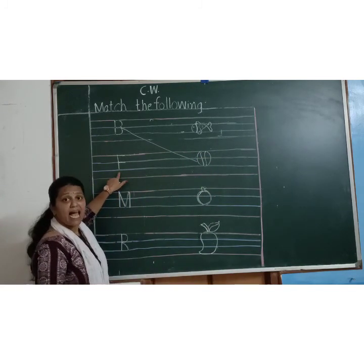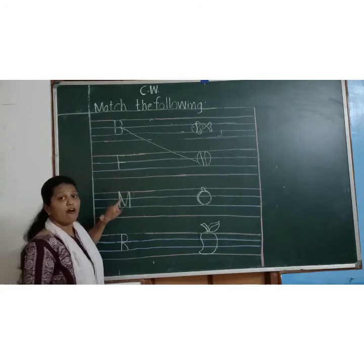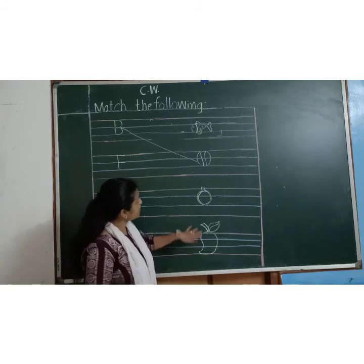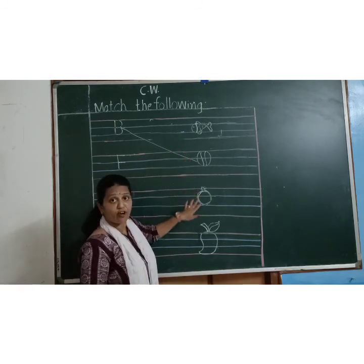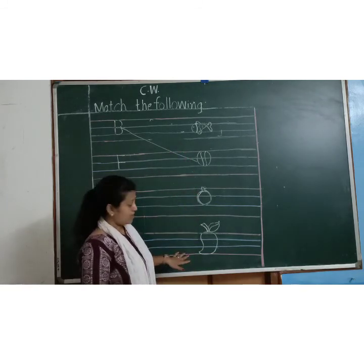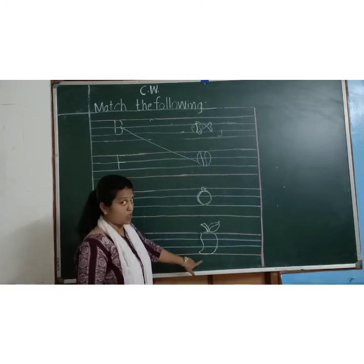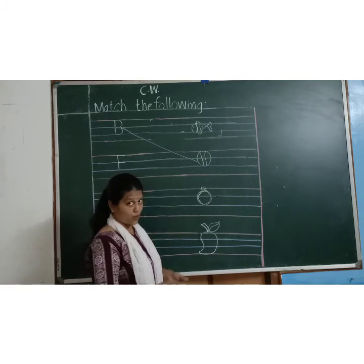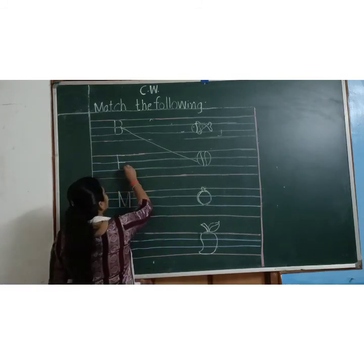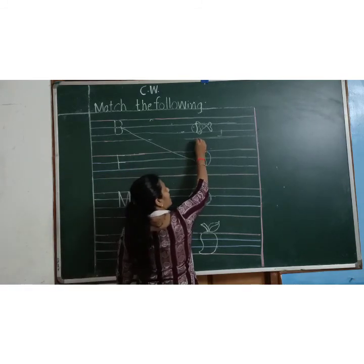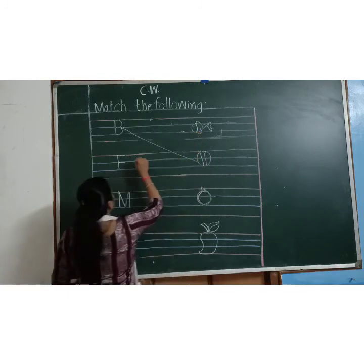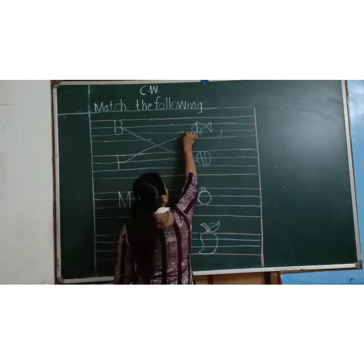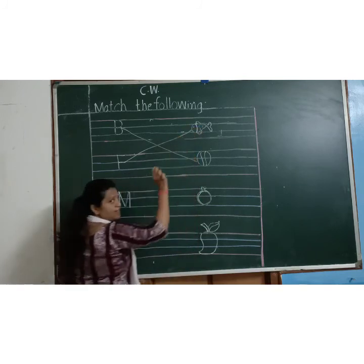Which letter is this? F. Here, which picture starts from letter F? This one? No. This one? Ring? No. So F says fish — fish. So you have to join F to fish. Right.